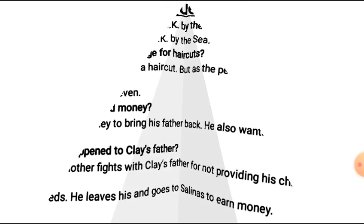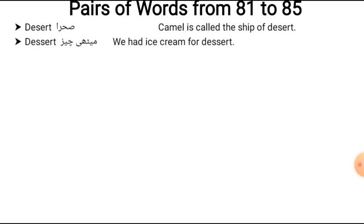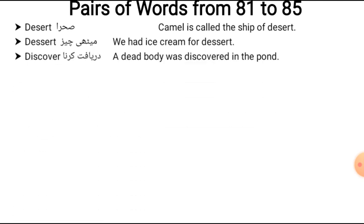Now we move to our pairs of words section, covering pages 81 to 85. First pair: 'desert' and 'dessert.' Desert means sahara — 'The camel is called the ship of the desert.' Dessert means a sweet dish — 'We had ice cream for dessert.' Dessert has an extra 's' compared to desert.